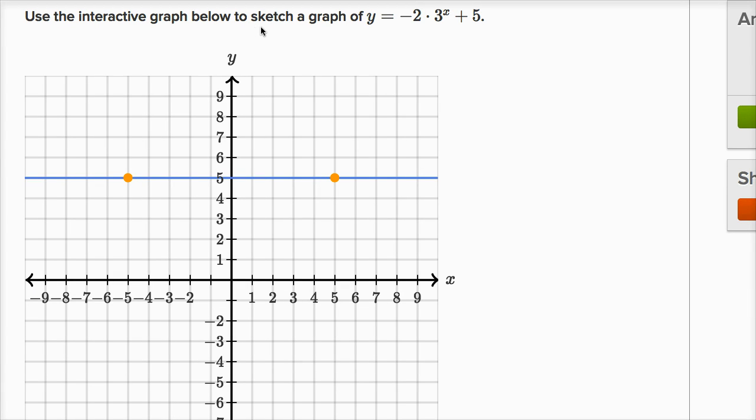We're told use the interactive graph below to sketch a graph of y equals negative two times three to the x plus five. So this is clearly an exponential function right over here.